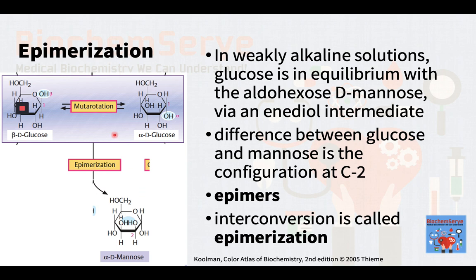In weakly alkaline solutions, glucose is in equilibrium with the aldohexose D-mannose via an enediol intermediate. The only difference between glucose and mannose is the configuration of the hydroxyl groups at carbon-2. Pairs of sugars of this type are referred to as epimers, and their interconversion is called epimerization.